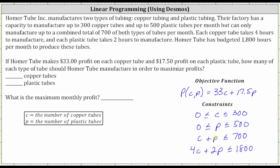Now that we have our four constraints, we will graph them using desmos.com to determine the feasible region, then determine the vertices of the feasible region. When graphing in Desmos, we will have to use the variables x and y, so for the purpose of graphing we will let C equal x and p equal y.